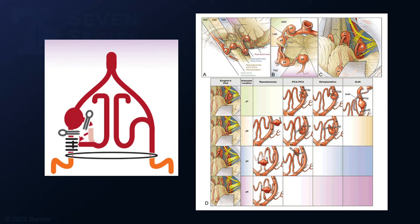In this case, this was a P1 segment aneurysm. Options available included re-implantation, PICA-PICA bypass, or graft. PICA-PICA side-to-side bypass was not a good option because the contralateral donor PICA was very small in caliber and part of an ICA-PICA system. Re-implantation turned out to be the best option.